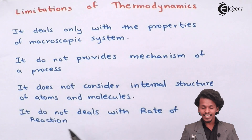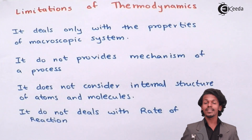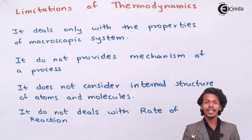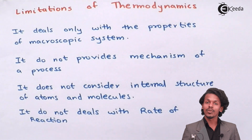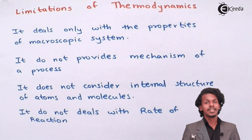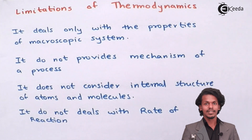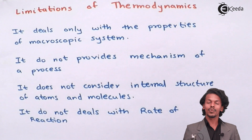Thermodynamics also doesn't deal with the rate of reaction. It has no relation with time — it only tells how much heat is produced or required when reactants are converted into products, but it doesn't depend on time. Since it is independent of time, it gives no information about whether the reaction rate would be faster or slower.